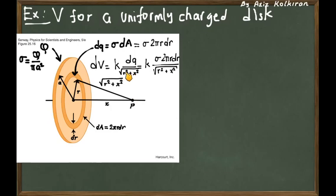So this is fixed. It is in terms of the radius of the ring: r squared plus x squared, in square root. And we can express also the dq explicitly in terms of r and dr. So this is the expression for the potential of all these rings.